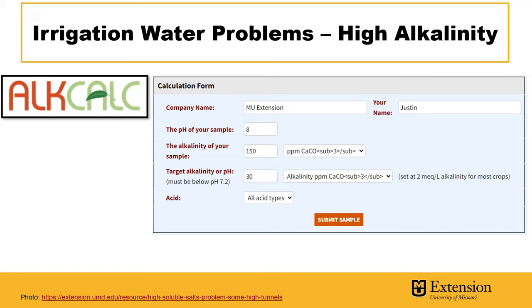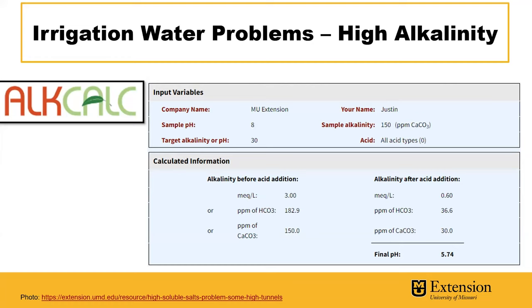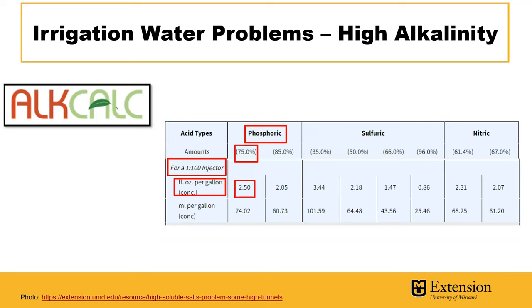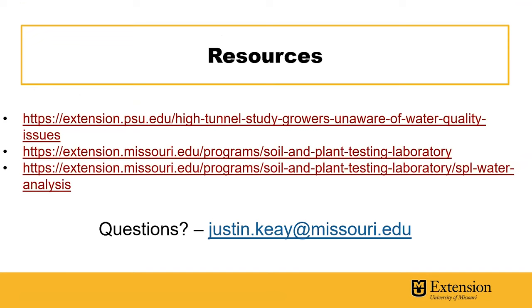You can see here I've entered a sample in the Acid Calc online form with a pH of 8, an alkalinity of 150 ppm calcium carbonate — which is outside of the desired range — and a target alkalinity of 30 ppm calcium carbonate, which is within the desired range. After clicking submit, you get information about the alkalinity before and after acid addition. It'll give you recommendations for different acid types like phosphoric, sulfuric, and nitric. For our target of 30 ppm calcium carbonate, we can use phosphoric acid at 75%, and with a 1-to-100 injector, we'll want to add 2.5 fluid ounces per gallon to our stock tank solution. There's also information for different injector ratios with this tool.